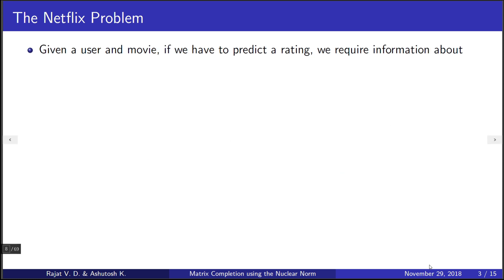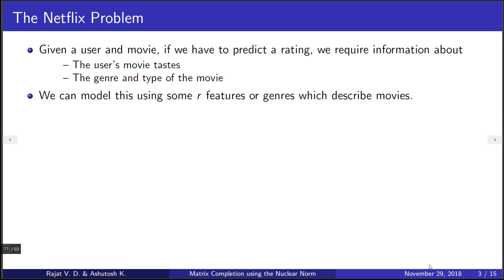To see why this is true, let's try to predict what rating a user would give to a movie. To do this, we need to know what kind of movies the user likes and what kind of genres are present in that movie. We can model this using a set of genres which would describe the movies and the users' tastes. Associate a vector u with each user whose entries describe the user's tastes, similarly a vector v for each movie whose entries describe the genres present in the movie.